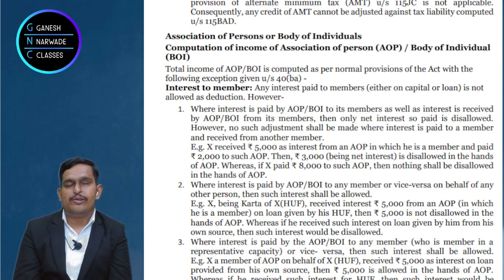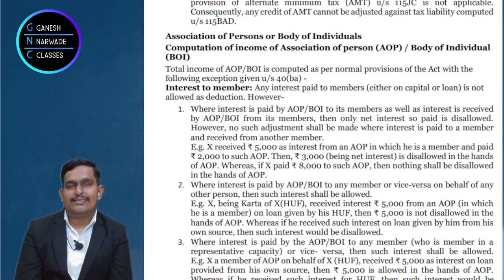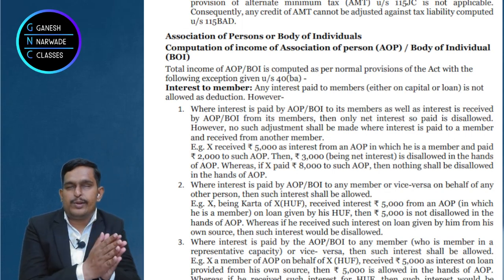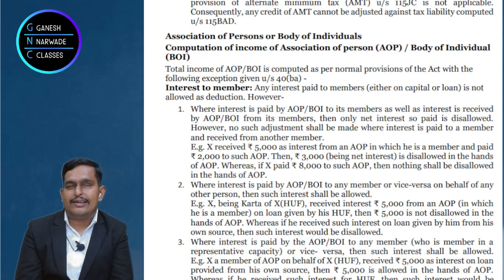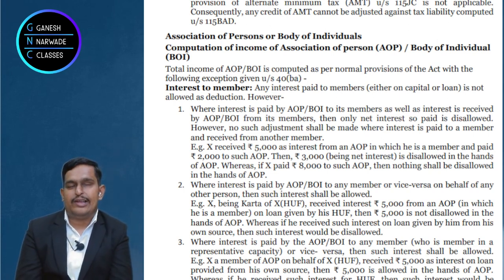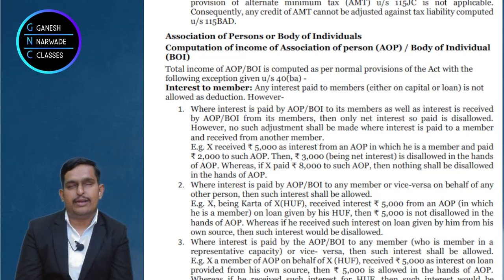Now, how to tax? How to compute the tax? The answer is same as normal business income. We learned so many provisions under the PGBP chapter, under house property, under capital gains, under other sources. AOP being an association will not get salary. How to compute income — we discussed under those heads. Same way, the provisions will be applicable. Will there be any change? No, all those provisions will apply as is.